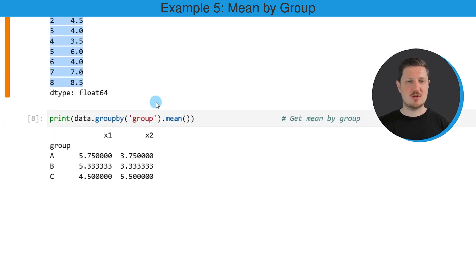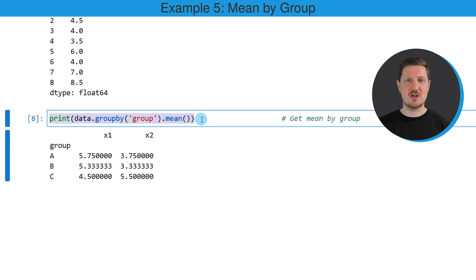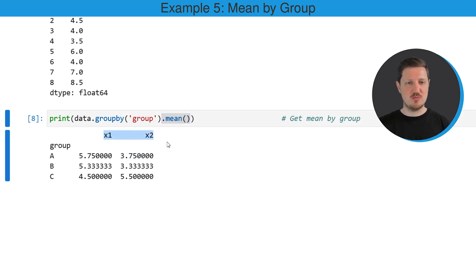It is also possible to calculate the mean value by groups. As you might have noticed, we also have one grouping column in our data frame. In the last code snippet, we are using this grouping column to group our data into different groups A, B, and C, using the group by function. Within this function, we specify the group column of our data, and then apply the mean function to calculate the mean for each of the columns in our data frame by group. The output shows the mean value for each of the groups and for each of the two numeric columns.